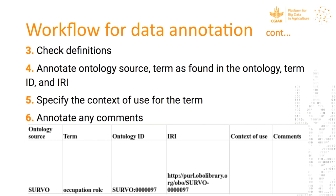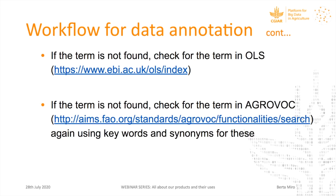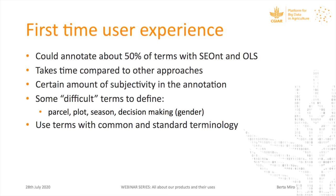The next step in the annotation workflow was to search for the survey term in SEANT using Protégé to visualize the ontology. For example, searching for 'occupation specific primary' — I typed 'occupation' in the search box and found options under occupation which corresponds to the drop-down annotation. When we find the term, we check we are happy with the definition and then annotate the ontology source, the term as displayed in the ontology, the specific ID, IRI, and context of use. This helps later check for consistency between surveys. If the term is not in SEANT, we can check in OLS or AgroVoc.